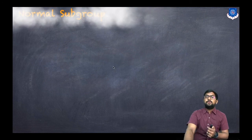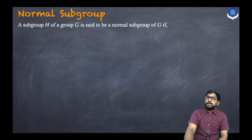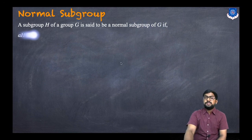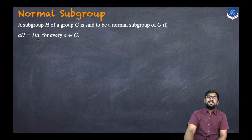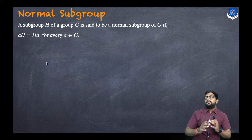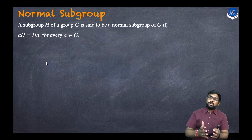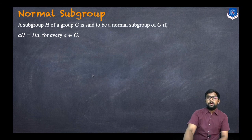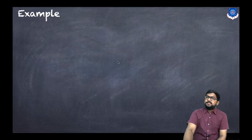First of all, let us understand what is a normal subgroup. A subgroup H of a group G is said to be a normal subgroup of G if aH equals Ha for every a belonging to G. These are the left cosets and these are the right cosets. So if we have a subgroup H of the group G, it is said to be a normal subgroup if the left cosets and right cosets are the same.